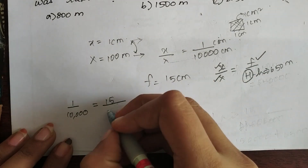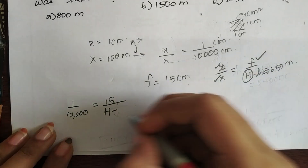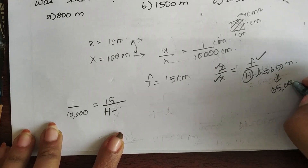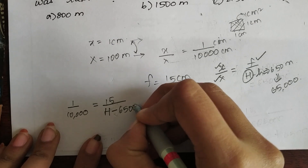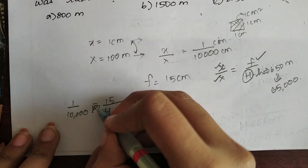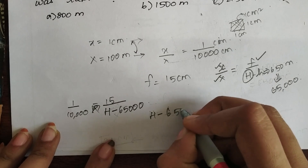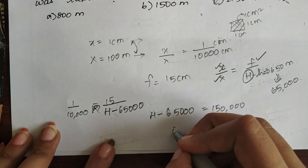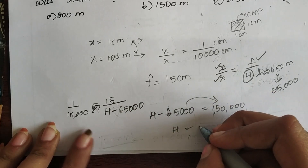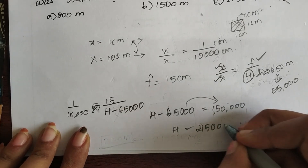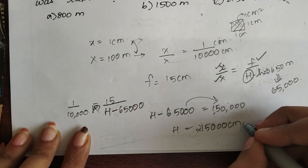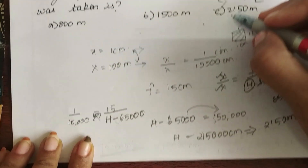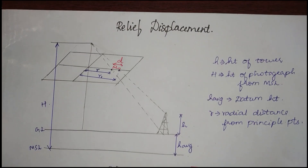Substituting: 1 divided by 10,000 equals 15 centimeters divided by (H minus 65,000 centimeters). Cross multiplying gives H minus 65,000 equals 150,000, so H equals 215,000 centimeters, which is 2,150 meters. That is option C.